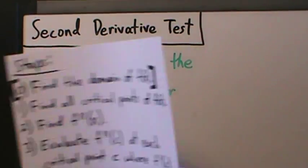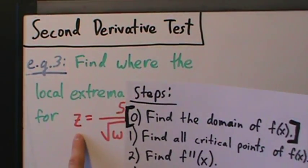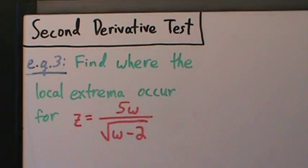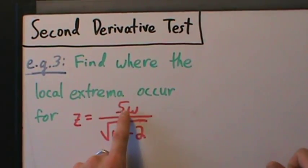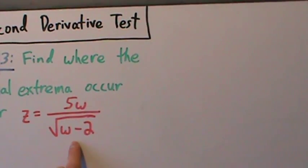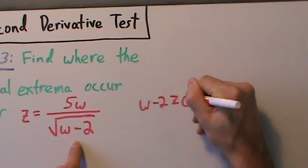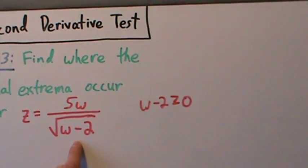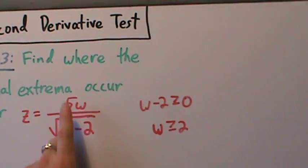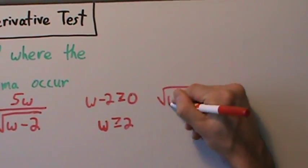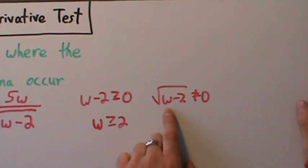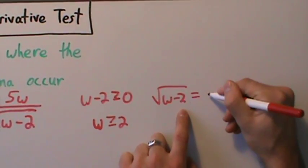So step 0: find the domain of the function — in this case we're calling it z. Finding the domain is going to be a little more important here, and we'll see why soon. So what is the domain of this function? Well, 5w doesn't give us any domain restrictions, but here we have the square root of w minus 2. If we're taking the square root of w minus 2, that means w minus 2 has to be greater than or equal to 0.